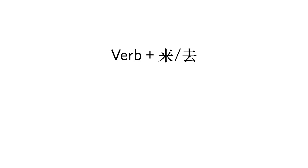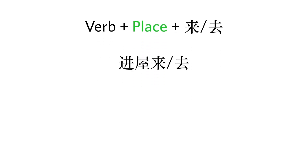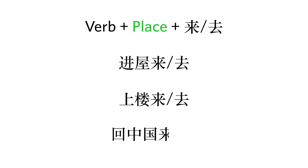Please note that this structure can also be used with a location word, and the location word should be placed between the verb and 来 or 去. For example: 进屋来 / 进屋去 — come into the house or go into the house. 上楼来 / 上楼去 — come upstairs or go upstairs. 回中国来 / 回中国去 — come back to China or go back to China.